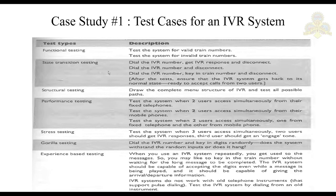Next, state transition testing — we identify different states of the system. State 1: dial the IVR number, get the IVR response, then disconnect. State 2: dial the IVR number and then disconnect immediately. State 3: dial the IVR number, key in the train number, then disconnect. For structural testing, draw the complete menu structure of the IVR and test all possible paths.